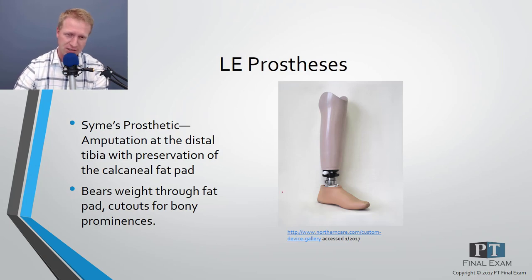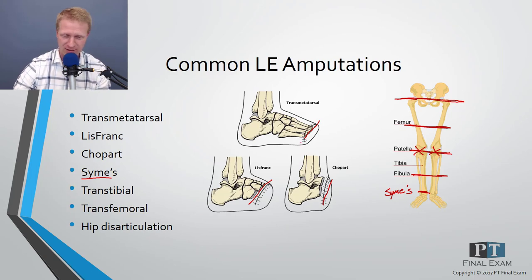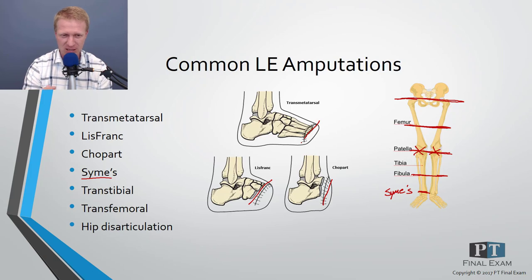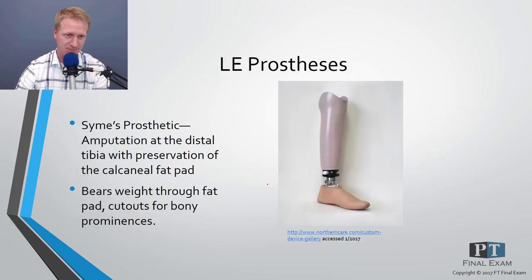Partial foot prostheses are also available — basically a shoe with prosthetic toes, or a partial shoe. A transmetatarsal prosthesis is typically just the forefoot, created to mimic the part that was amputated.